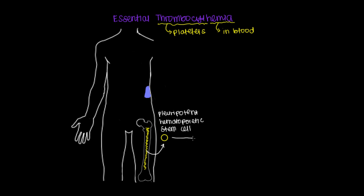This cell can then embark on two different types of lineages. We're not going to talk about the lymphoid stem cell, but let's focus here on the myeloid stem cell.